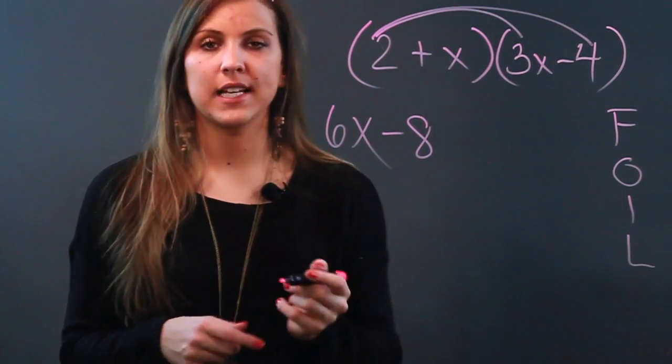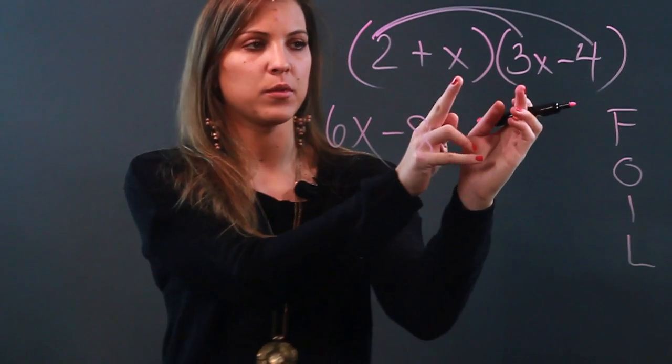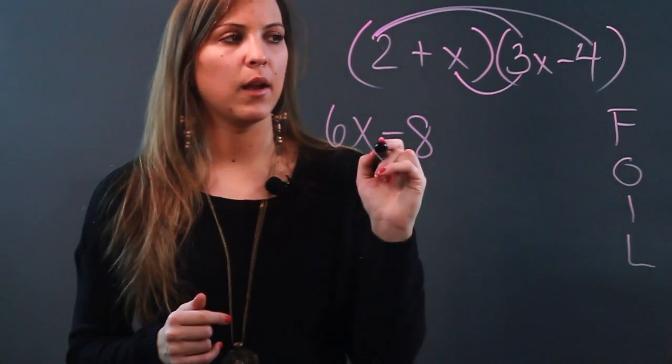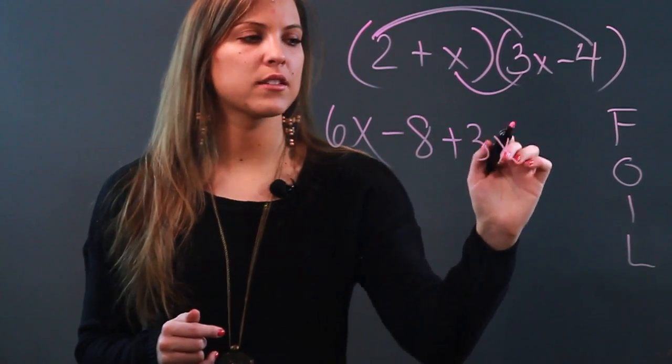And now I'm going to I, which stands for inner. So I'm doing the terms that are innermost, which is x times 3x. And when I do that, I get positive 3x squared.